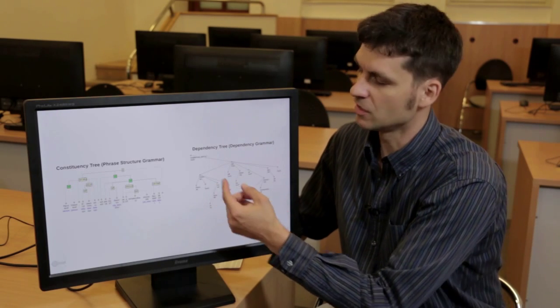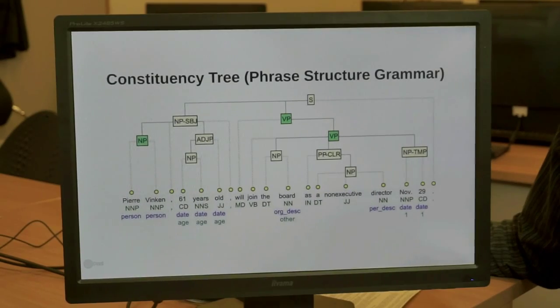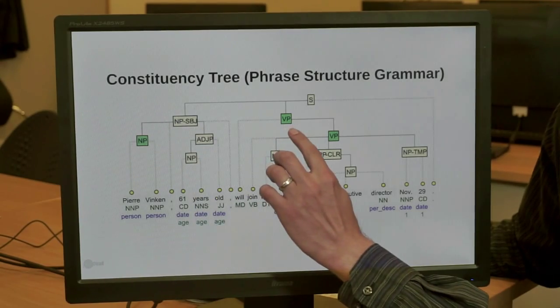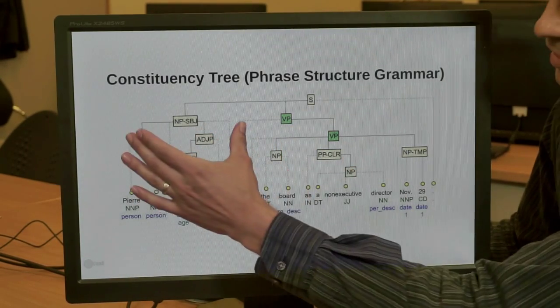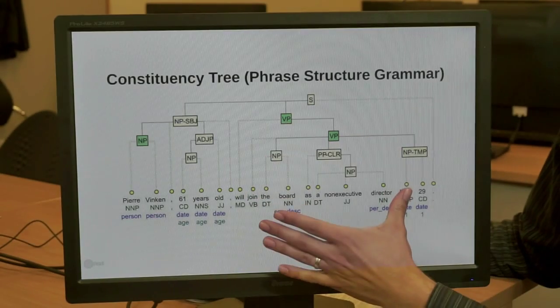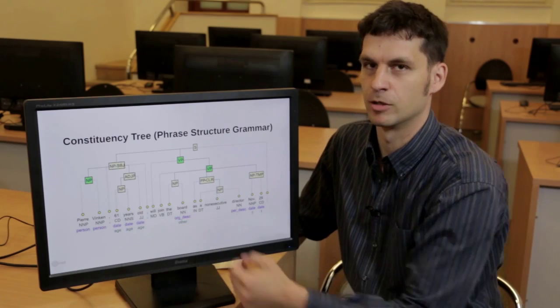Dependency trees, on the other hand, record relationships between individual words. The inner nodes in a constituency tree are labeled with non-terminals, abstract units that correspond to parts of the sentence, such as this subject part and this verb part. It's only the leaves in the tree that correspond to individual words.